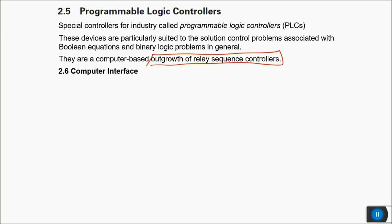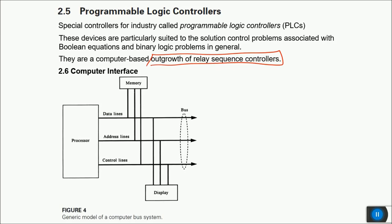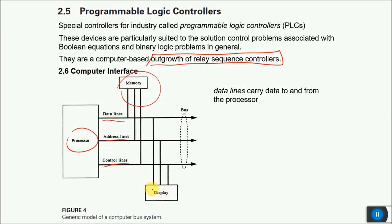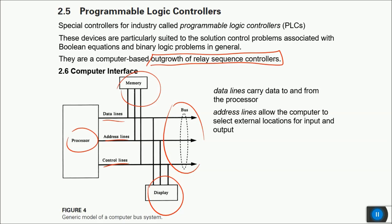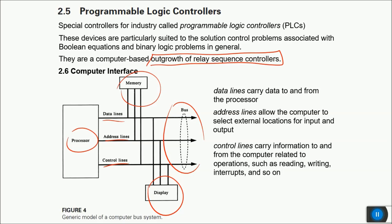A computer-based system has basic components: a processor, data lines, address lines, control lines, a memory, and a display. These address, data, and control lines are collectively called a bus. Data lines carry data to and from the processor; address lines select external I/O locations; control lines carry information related to operations such as reading, writing, and interrupts.